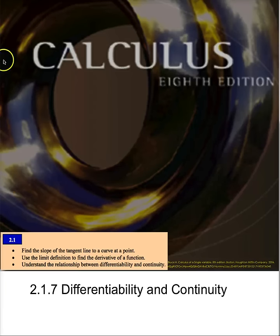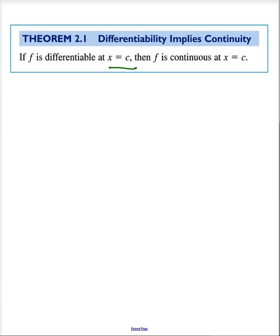Now let's talk about continuity versus differentiability. Theorem 2.1 says that if f is differentiable at x equals c, then f is also continuous at x equals c.